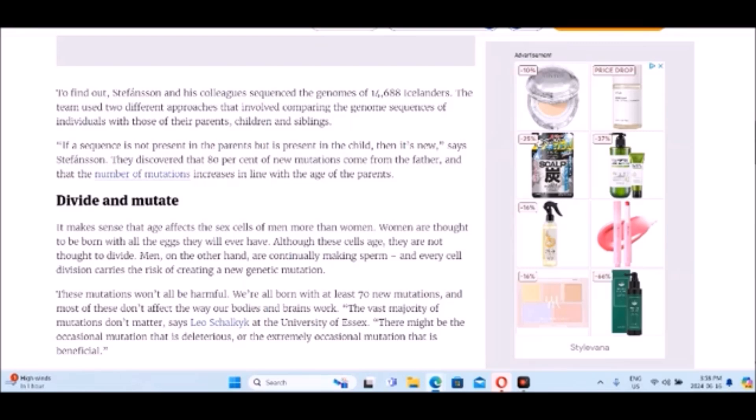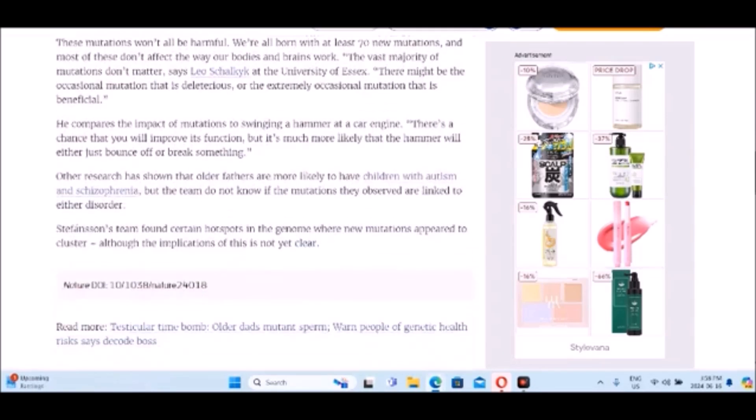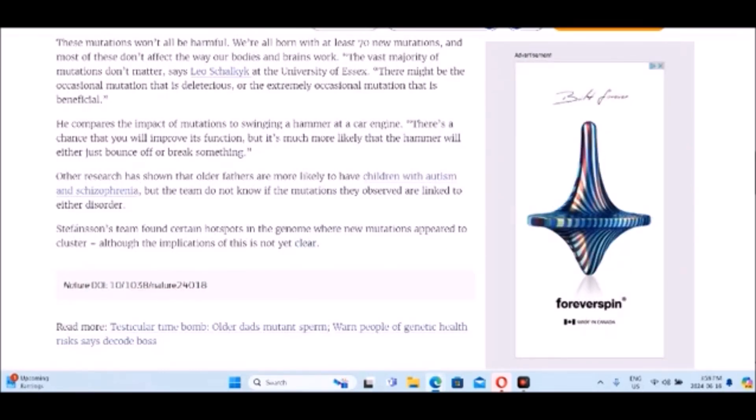These mutations won't all be harmful. We're all born with at least 70 new mutations and most of them don't affect the way our bodies or brains work. The vast majority of mutations don't matter. There might be the occasional mutation that is deleterious or extremely occasional mutation that is beneficial. He compares the impact of mutations to swinging a hammer at a car engine. There's a chance you will improve its function, but it's much more likely that the hammer is going to either bounce off or break something. Other research has shown that older fathers are more likely to have children with autism and schizophrenia.